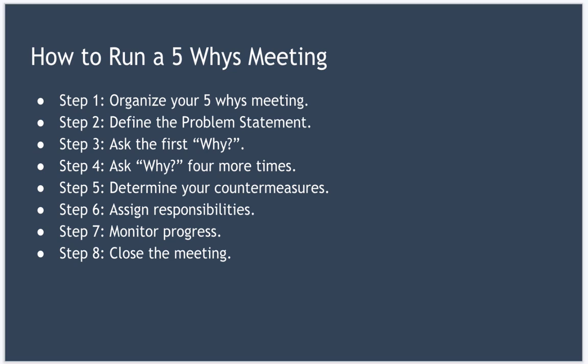Step three: ask the first why — ask your assembled team why the problem is occurring. If there's more than one reason given, ask your team to vote on the most likely cause and write their answer next to the first why on the whiteboard. Step four: ask why four more times — each time, use the previous answer to base your next question on. Once you've done this, you'll have five reasons, one for each why question.